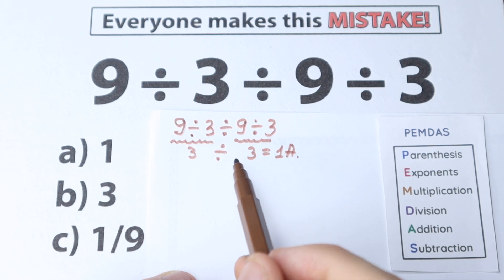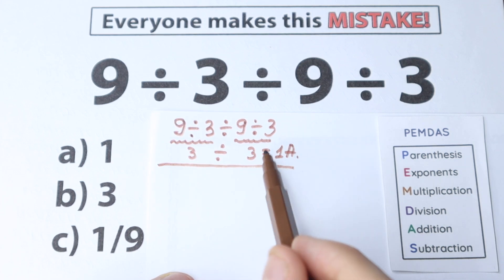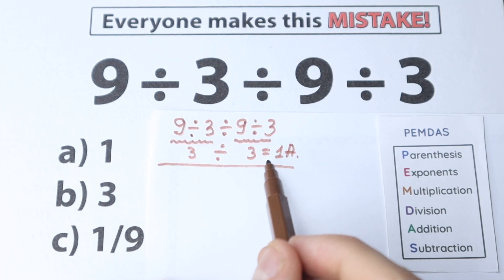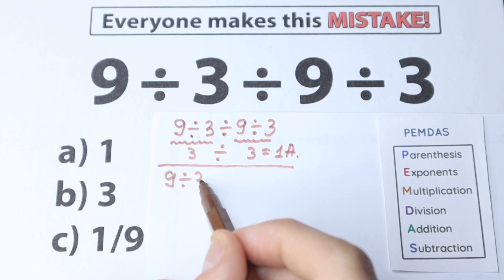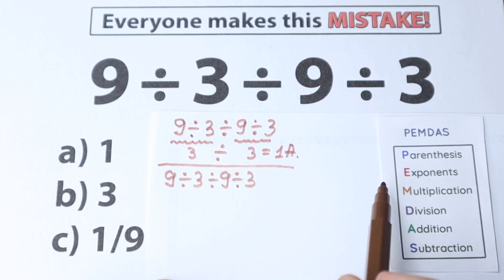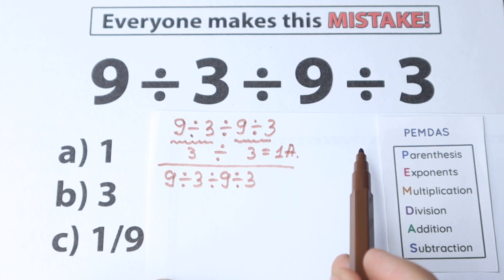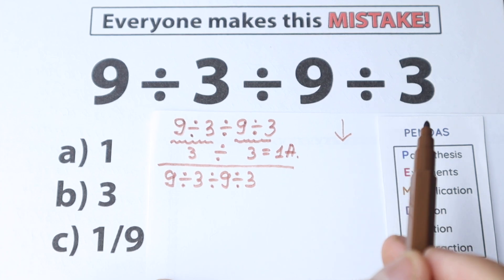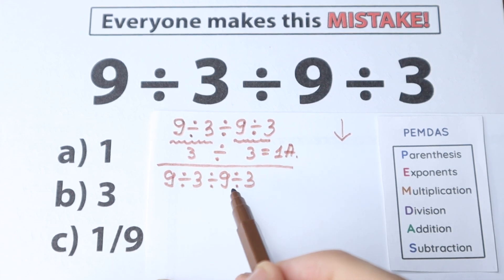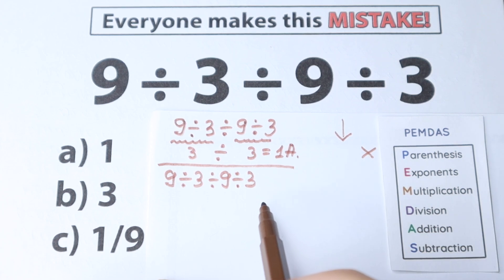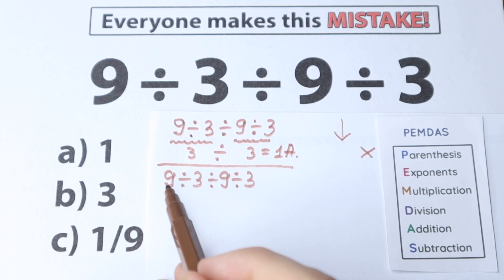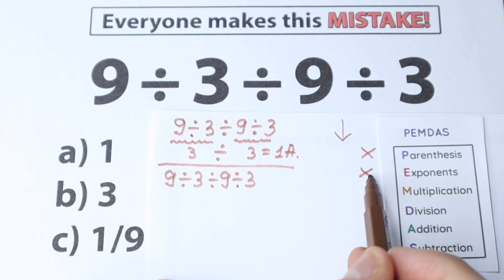Let's check our answer against this method. PEMDAS works from the top to the bottom. The first step is parentheses — scanning the expression, I don't see any parentheses, so we skip this part. Next, exponents — maybe we have something like three squared or nine cubed — no, we don't have any powers, so we skip exponents as well.